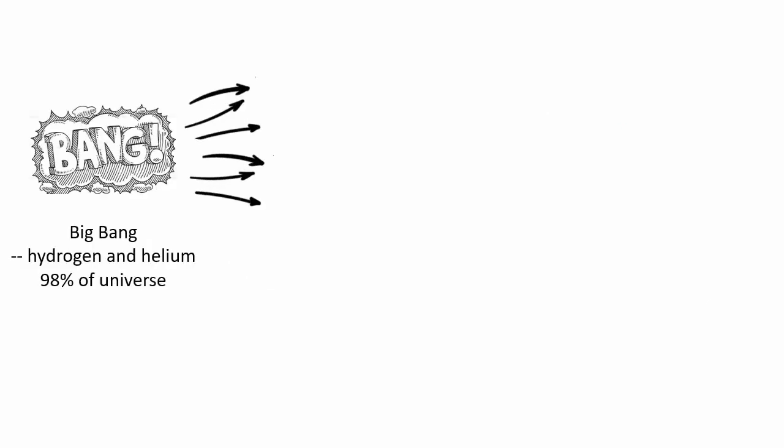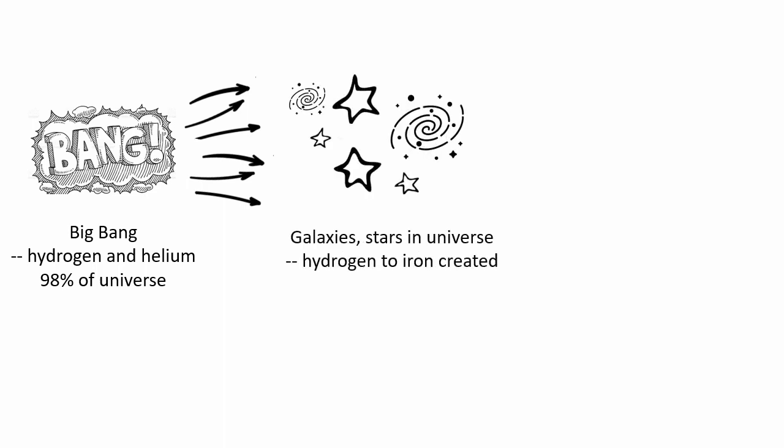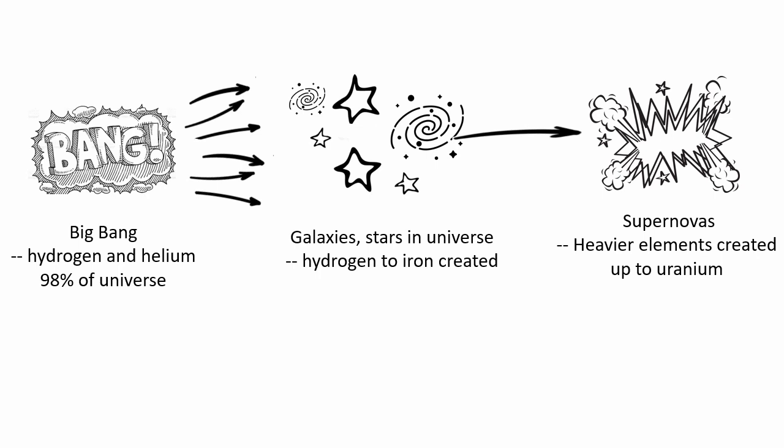Here's the big picture. The Big Bang created mostly hydrogen and helium. Some stars created elements up to iron and supernova nucleosynthesis created all the heavier elements.